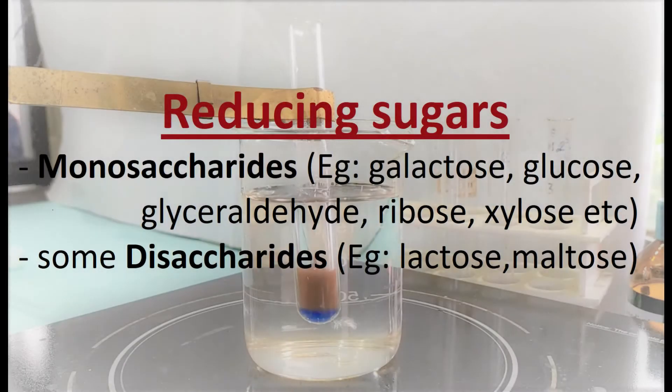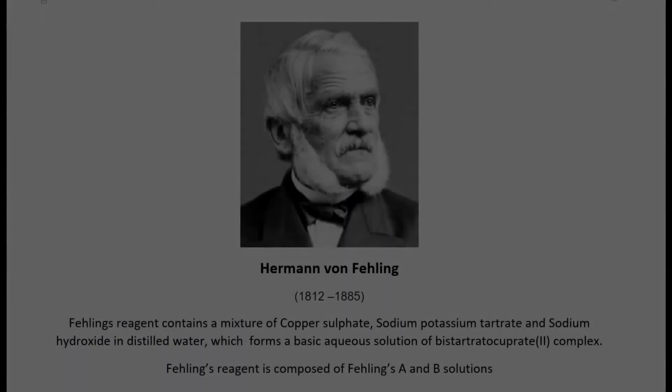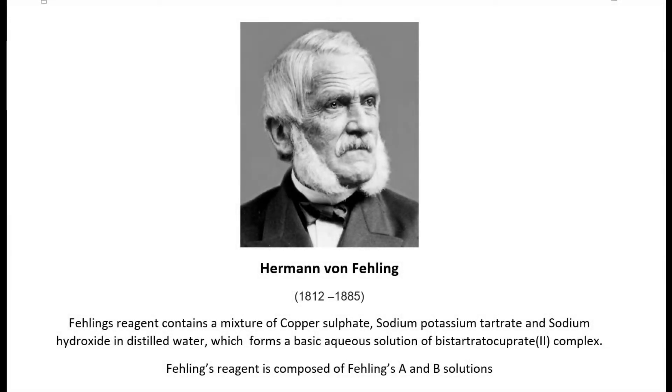Reducing sugars include almost all monosaccharides such as galactose, glucose, glyceraldehyde, ribose, xylose, and some disaccharides like lactose and maltose. Fehling's reagent was developed by German chemist Hermann von Fehling in 1849.